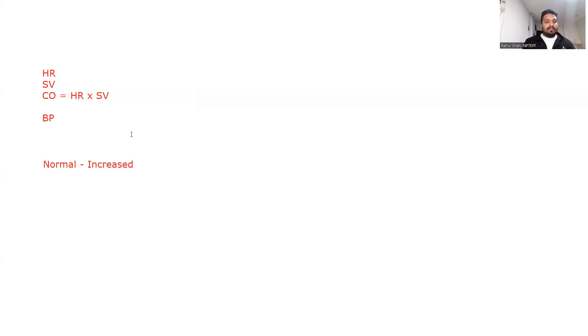Whenever we are talking of these conditions — going on a hike at altitude, going for a swim in aquatic therapy, or pregnancy — these are all normal day-to-day life conditions. In these conditions, the cardiac output will always be increased because you are doing an activity. These are not cardiac conditions like heart failure where cardiac output decreases, so in all of these normal conditions, cardiac output will always be increased.